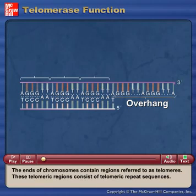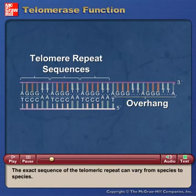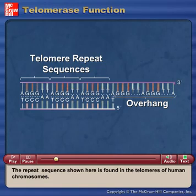The ends of chromosomes contain regions referred to as telomeres. These telomeric regions consist of telomeric repeat sequences. The exact sequence of the telomeric repeat can vary from species to species. The repeat sequence shown here is found in the telomeres of human chromosomes.